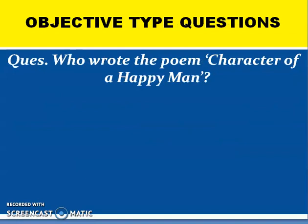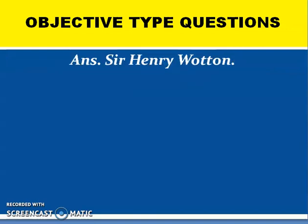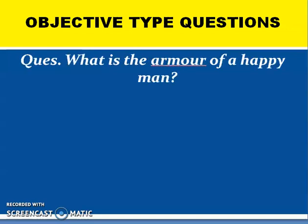Who wrote the poem 'Character of a Happy Man'? Dear students, now we are at the second type of questions — objective type questions. These questions will come under part one of your question paper. The answer is Sir Henry Wotton. Next question: what is the armour of a happy man? The armour of a happy man is his honest thought.